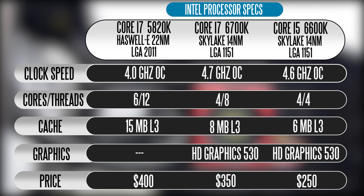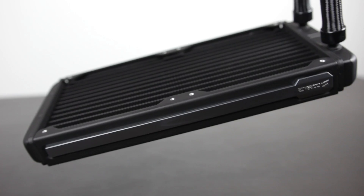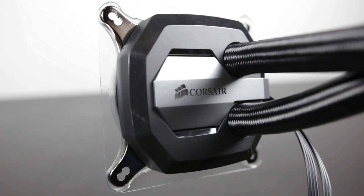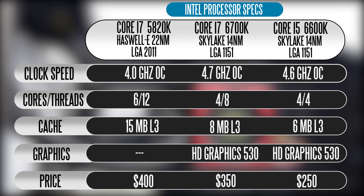We've overclocked the 5820K to about 4 GHz, 4.7 GHz was the frequency we overclocked our 6700K, and the 6600K was overclocked to about 4.6 GHz. We can certainly go higher, but I find this to be stable based on the cooling platform I'm using, primarily with the Corsair all-in-one liquid cooling solutions. Another thing to mention is that we have different levels of cache on each processor: 15 MB of L3 cache on the 5820K, 8 MB on the 6700K, and about 6 MB on the 6600K.